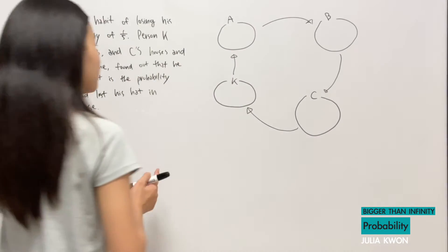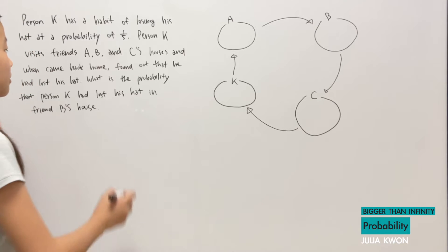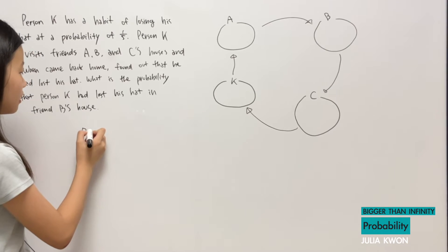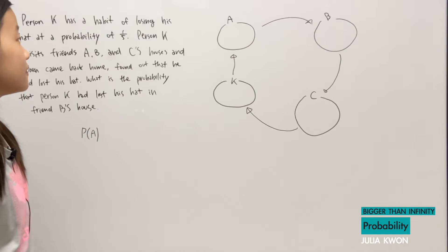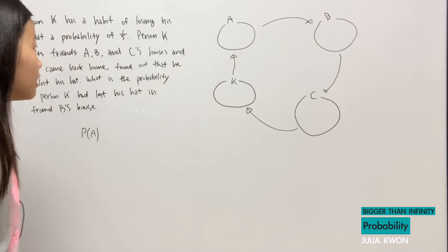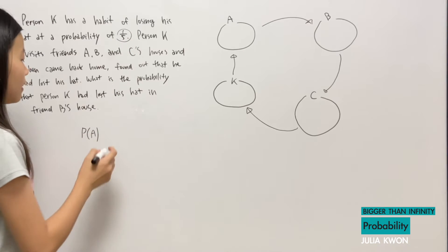So first, we're going to write out all of the probabilities here. So the probability of person K losing his hat at his friend A's house will be 1/5.